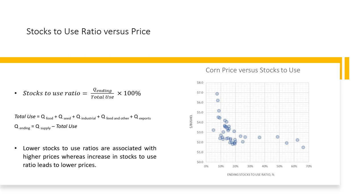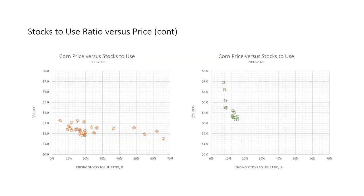Historically, government programs have influenced how much corn to keep in inventory. Ending stocks become beginning stocks the following year. The scatter plot of average farm price versus stocks-to-use ratio shows that lower stocks-to-use ratios are associated with higher corn prices, and vice versa. Due to the large expansion of ethanol production, it is useful to split the data into two periods: 1980-2006 and 2007-2021. In both periods the relationship is negative, but the price response to a change in the stocks-to-use ratio is much greater after 2007 — a simple linear regression would show a steeper slope in the second period.